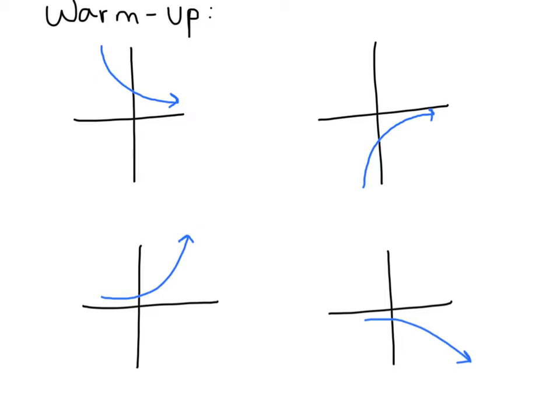If you guessed that this first one right here is decay, you're right because that arrow is going down and the numbers are getting smaller. If you guessed that this one was growth, you were right because the values are getting very big very quick. If you guessed this third one was growth, I'm sorry to say you were not right.